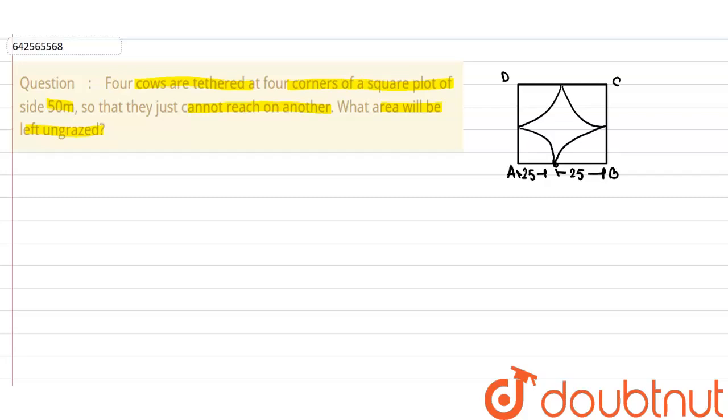Now what we will do is we will consider, so we will say let the side of the square, the side of the square be A meter. Be A meter. So we are considering the side to be A meter. So A is equal to 25 plus 25 which is equal to 50 meter.